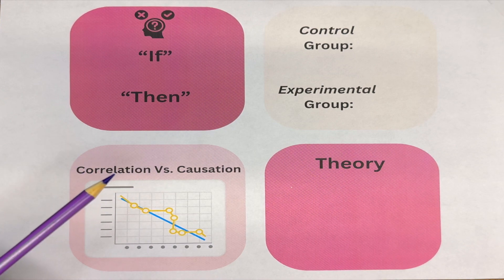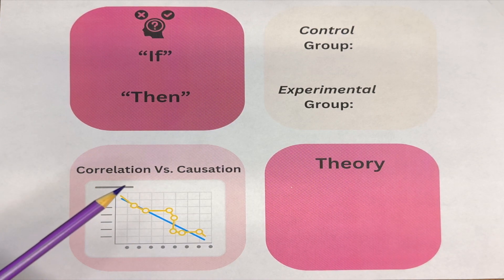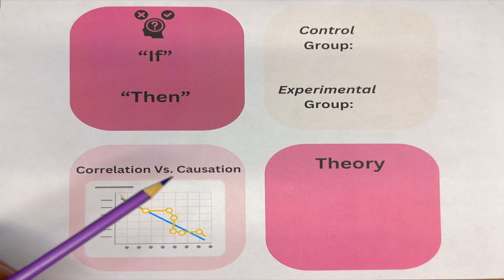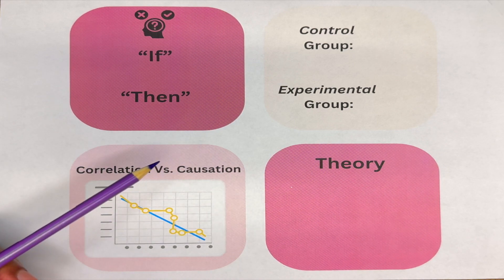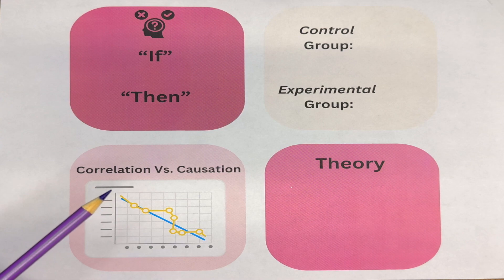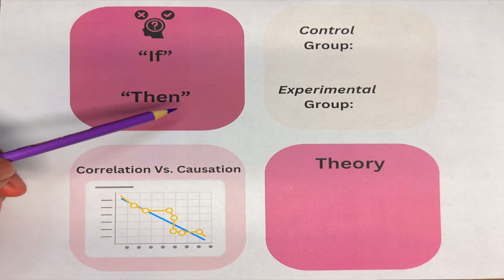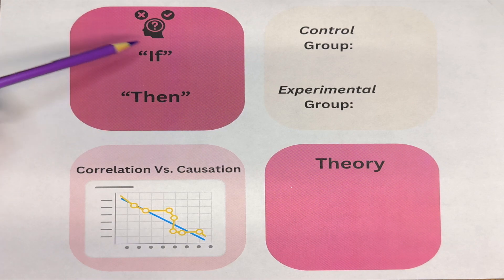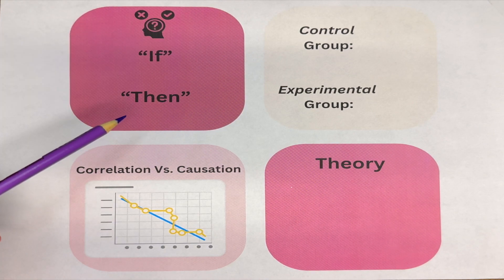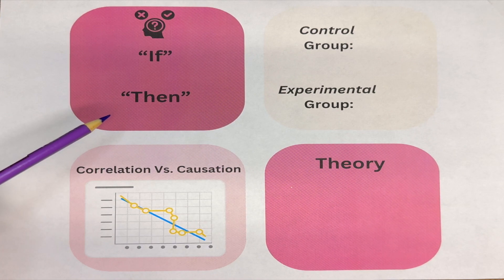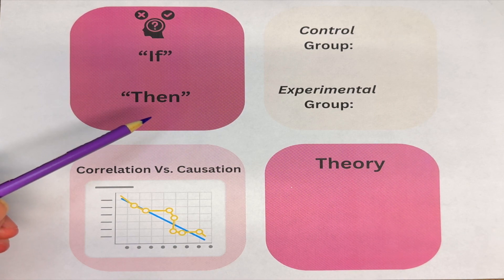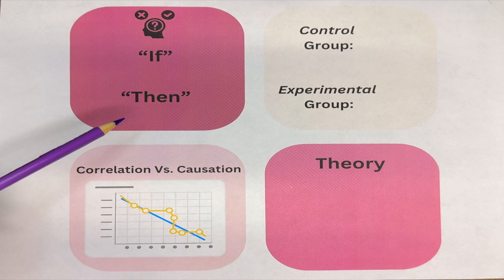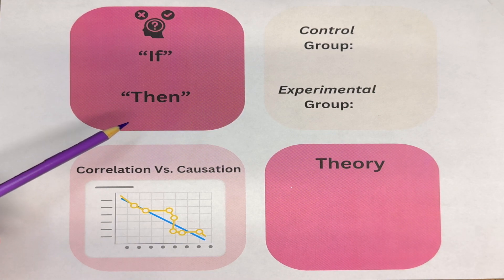Before we go over an example of the scientific method, there are a couple of terms and concepts to cover first. The third step — the hypothesis — is a potential answer that can be tested. It comes in the form of a statement, a predictable statement.